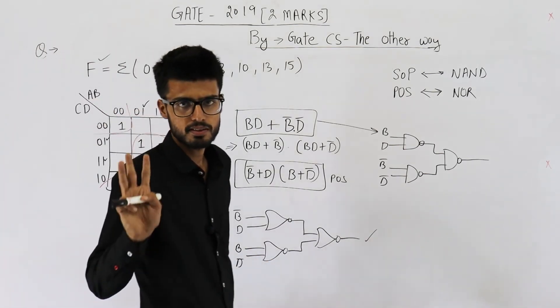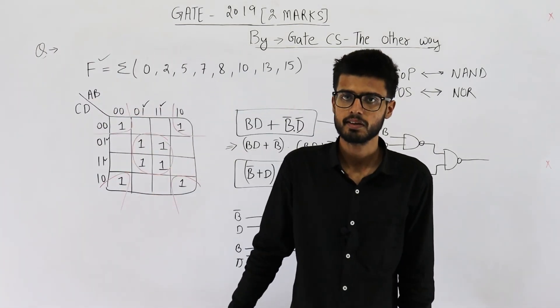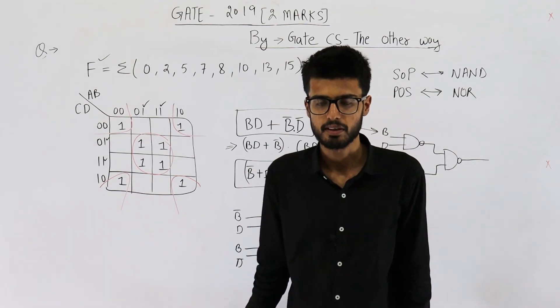Anyways, answer to this question is three. Minimum three NOR gates are required for implementing it.